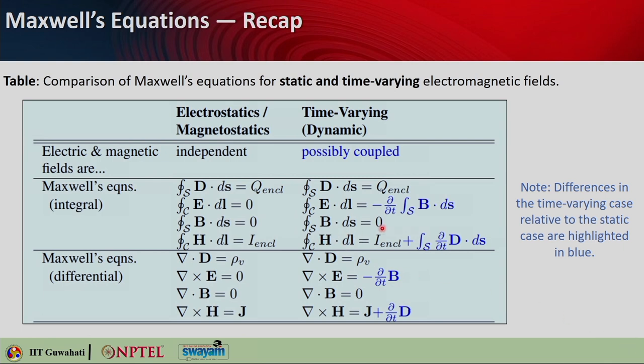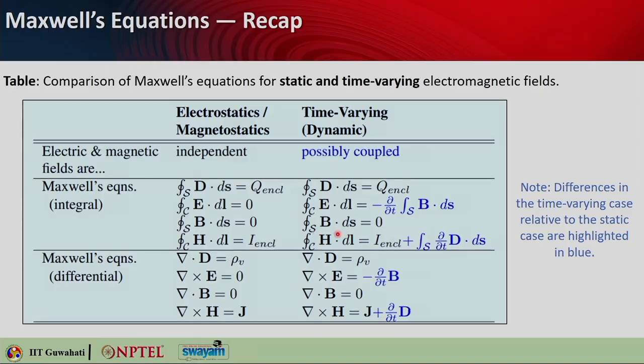The second equation is Gauss's law of magnetism: the magnetic field flux through any closed surface is zero. This is equivalent to saying that magnetic fields are continuous and have no beginning or end — any magnetic field line entering a region enclosed by a surface must also leave that surface. It means there is no magnetic monopole where magnetic field lines can terminate, which is why the surface integral of B·dS is zero.